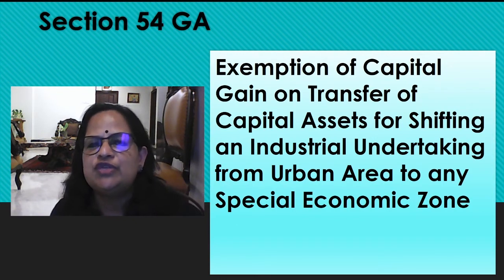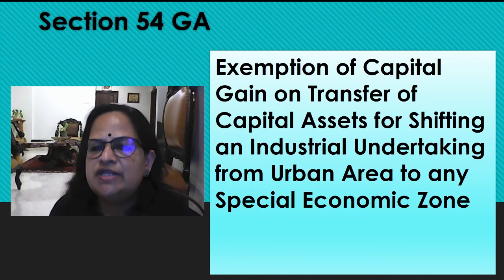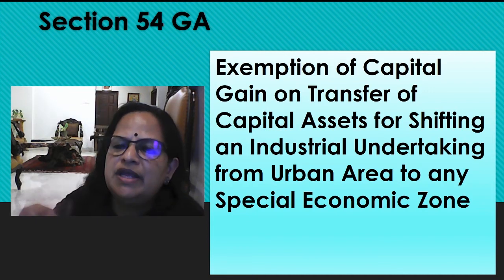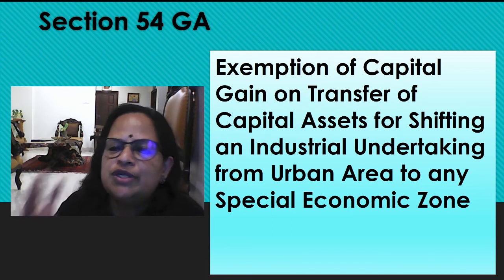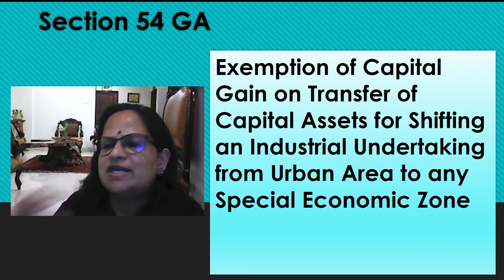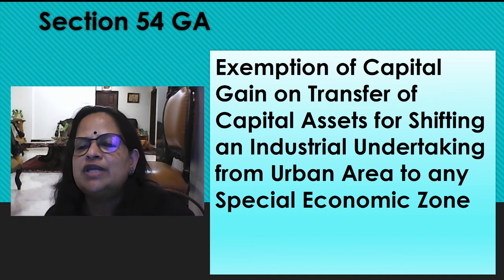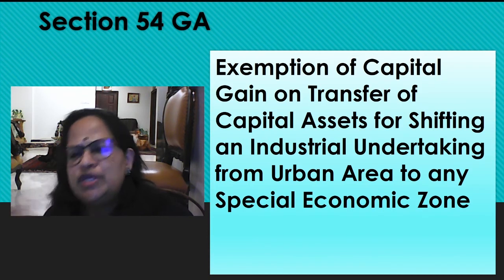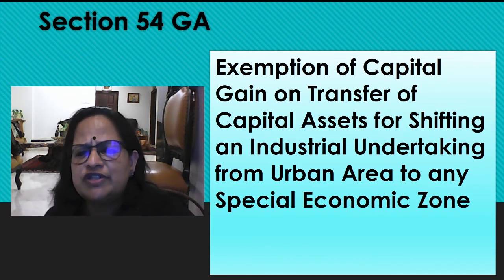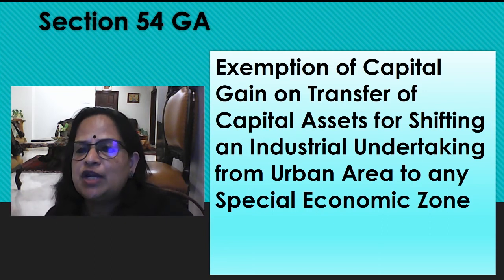Next is section 54GA: exemption of capital gain on transfer of capital asset for shifting of an industrial undertaking from an urban area to any special economic zone. You know the importance of special economic zone. When government announces a special economic zone, they get many benefits: 24-hour power, uninterrupted water supply, 100% export oriented unit, no strike or lockout, trade unions are not allowed, 24 hours 365 days they can work, and good infrastructure. All the facilities government will provide.